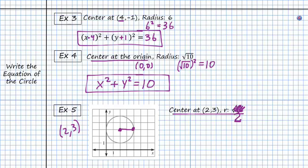So we have (x - 2)² + (y - 3)² = 2², which will be 4. So my equation will look like this.